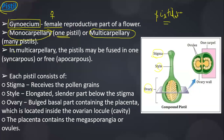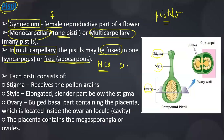In multicarpellary flowers, the pistils may be fused — that condition is called syncarpous. If the pistils are free, it is called the apocarpous condition. This is a very important MCQ, repeated at least 20-25 times from this chapter in connection with morphology.